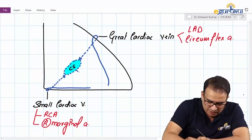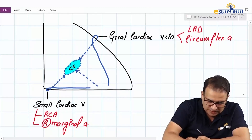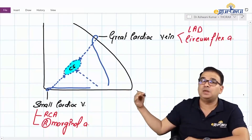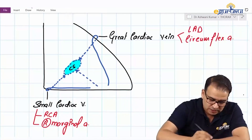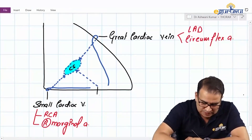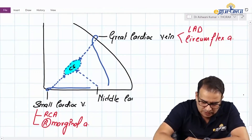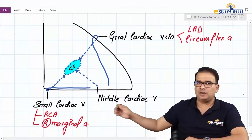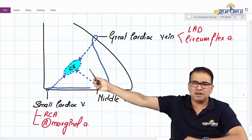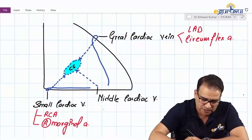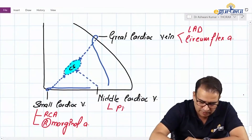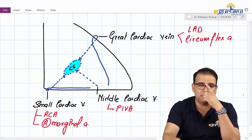Then we have a vein draining into the coronary sinus that is present on the posterior side between the two ventricles — this is called the middle cardiac vein. The middle cardiac vein is accompanied by the posterior interventricular artery, also called the PIV or posterior interventricular artery.